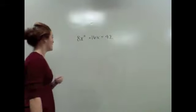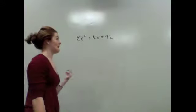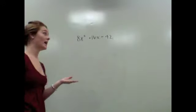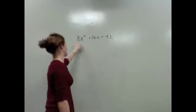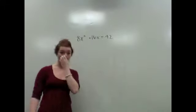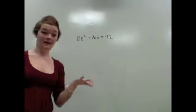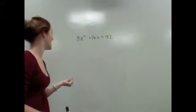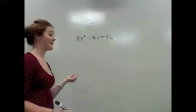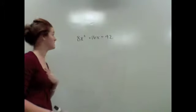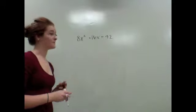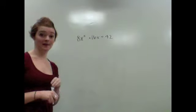Alright, so I have an issue here. I have an a value. Now if you don't have an a value, which is attached to the x squared, then you're in good luck because you don't have to do much. However, in this situation, I actually have to deal with the fact that I have an a value. So what I'm going to do, I could do two things here. I could divide everything by the a term.